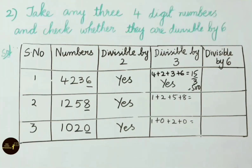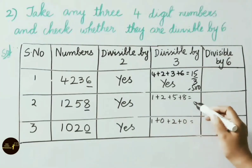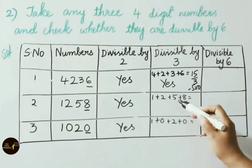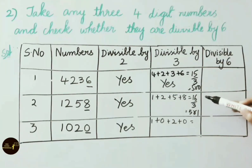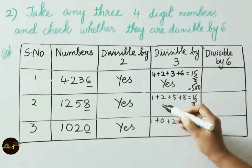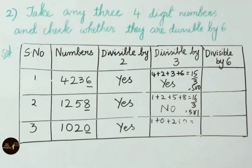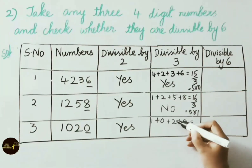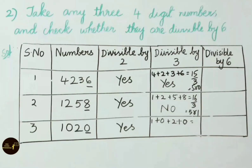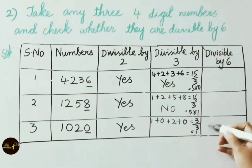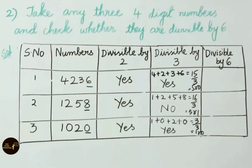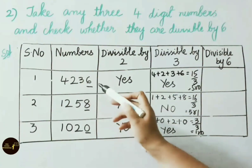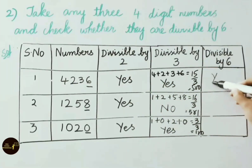For 1258: sum of digits is 1+2+5+8=16; dividing 16 by 3 gives 5 remainder 1, so 1258 is not divisible by 3. For 1020: sum of digits is 1+0+2+0=3; 3 divided by 3 gives 1 with remainder 0, so 1020 is divisible by 3. Now for divisibility by 6: 4236 is divisible by both 2 and 3, so it is also divisible by 6. 1258 is divisible by 2 but not by 3, so it is not divisible by 6. 1020 is divisible by both 2 and 3, so it is also divisible by 6.